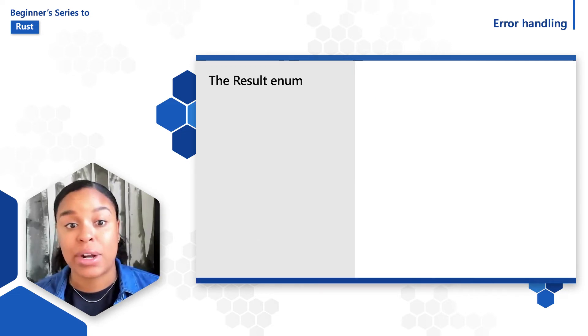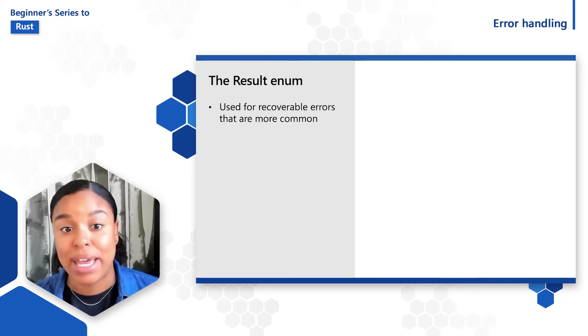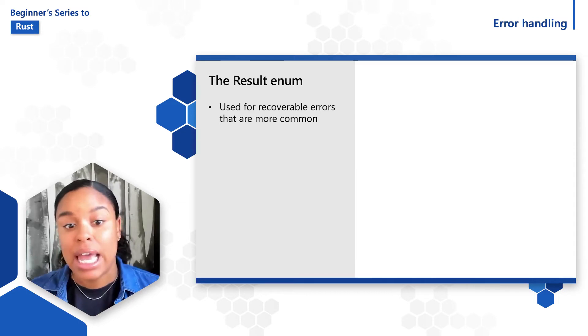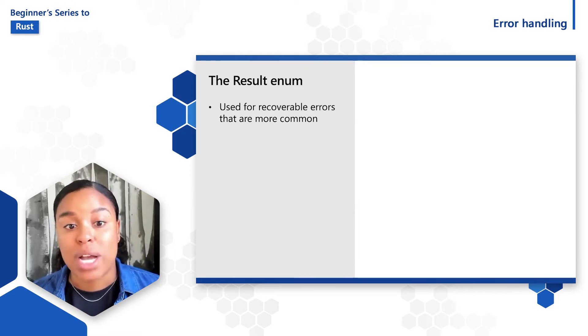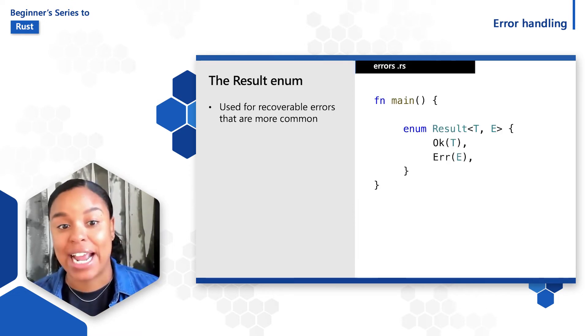For other recoverable errors that are more common, the result type can be used. Examples of recoverable errors might be when a function fails or an operation that you expect to work doesn't. Maybe your program tries to open a file that doesn't yet exist. Luckily, Rust provides the result enum for returning and propagating errors.